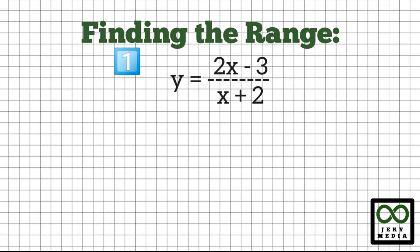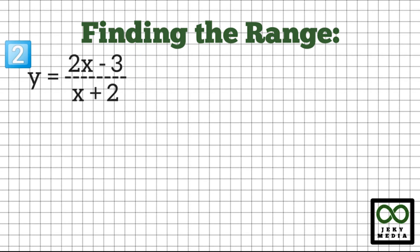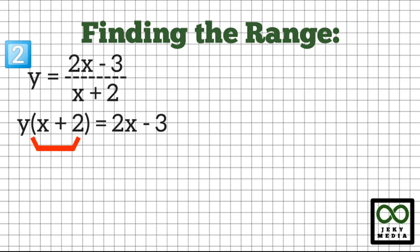Step 2: Solve the equation for x in terms of y. Multiply the denominator (x plus 2) to y. This will become y times (x plus 2) equal to 2x minus 3. Let's expand the left side.